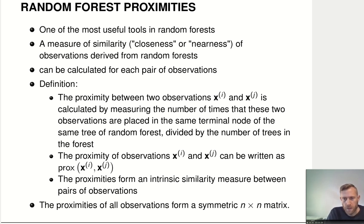It's simply, we count how many times two observations, xi and xj, end up in the same terminal node of the same tree in a random forest. And we divide that by the number of trees in a random forest. That's it. We just count how often these two observations end up in the same leaf.